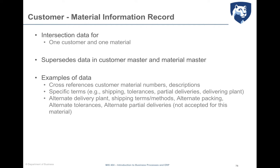Another type of master data is the customer material information record. It is comprised of master data specific to one customer and one material. In contrast to data in a material master — which apply to all customers — and data in the customer master — which apply to all purchases made by a particular customer — data in the customer material info record relate to purchases of a specific material by a specific customer.